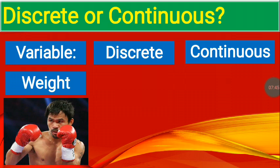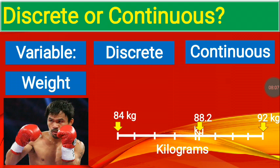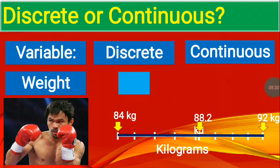Let's talk about the weight. Do you know whose picture is that? You have one of the most popular person in the whole world, you have Manny Pacquiao. For instance, we're talking about the weight. Considering Manny Pacquiao's weight is, let's say, 88.2 kilograms or 92 kilograms. Is it discrete or continuous? Try to analyze. It is continuous. As you can see, there are decimal places or decimal points.